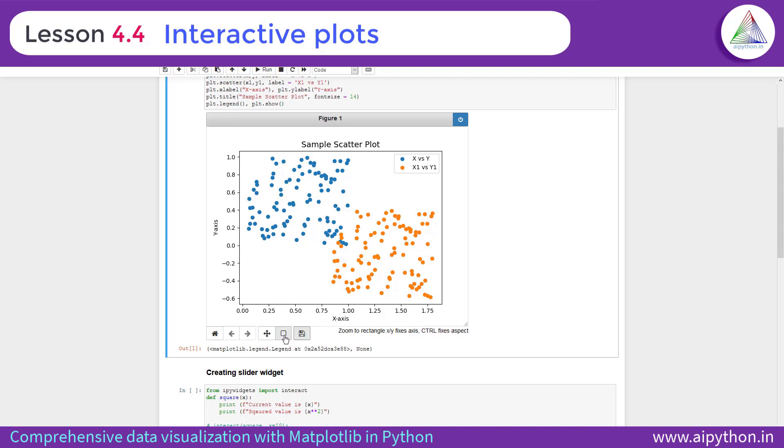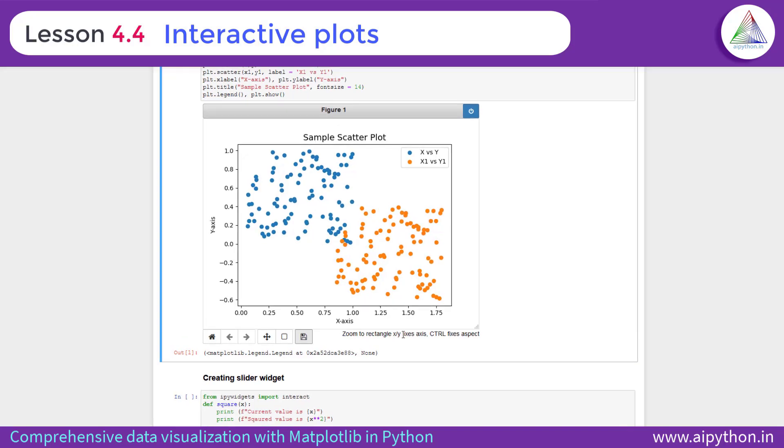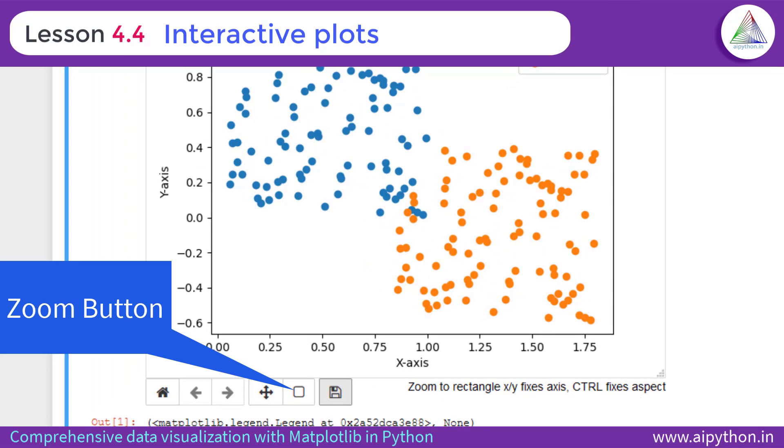The second one is this zoom feature. When you hover over the mouse, you can see the description. Zoom to rectangle X, Y axis, control fixes the aspect. So what it means?